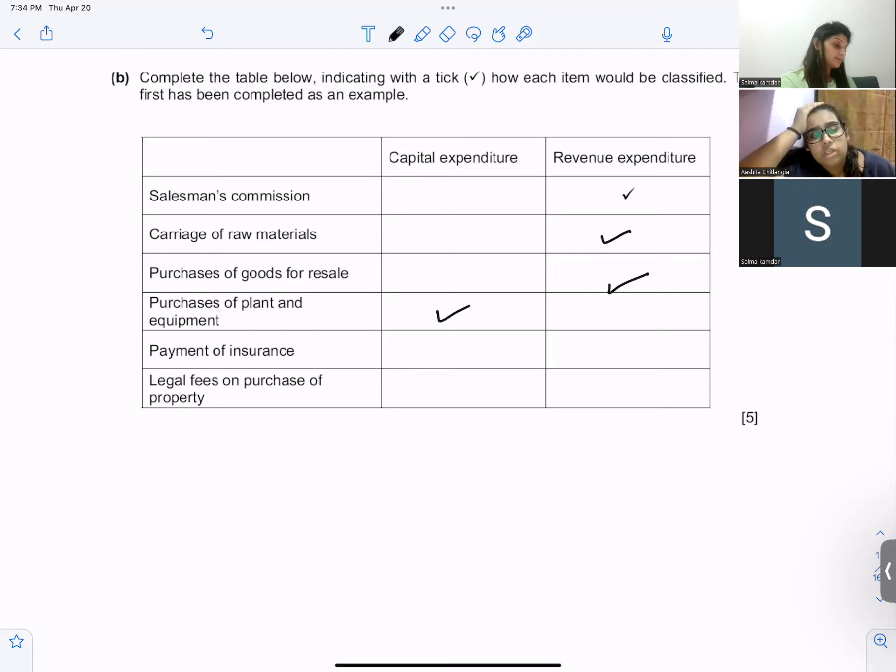Payment for insurance is capital, why? Because you don't pay for insurance every time, you only pay once you pay yearly. Okay, so it's revenue. Legal fees on purchase of property is capital. Okay, very good.